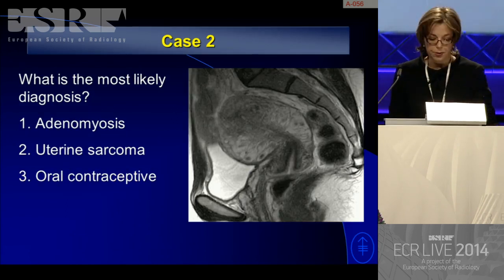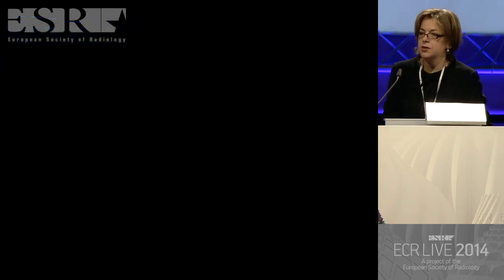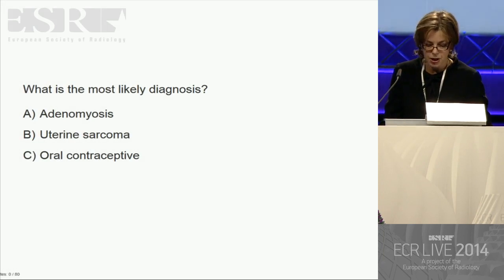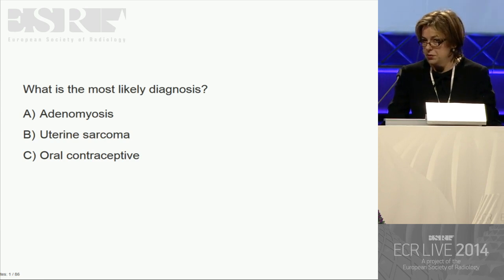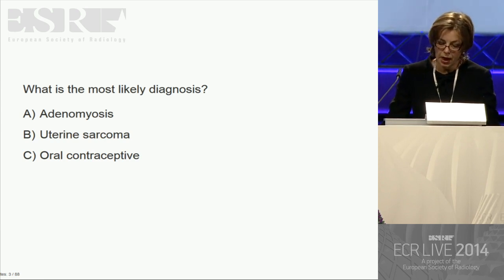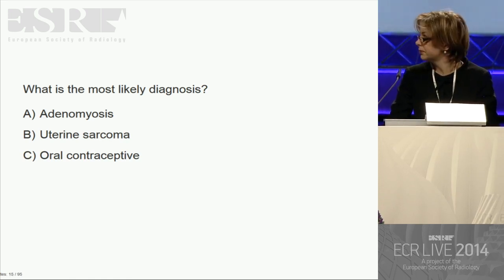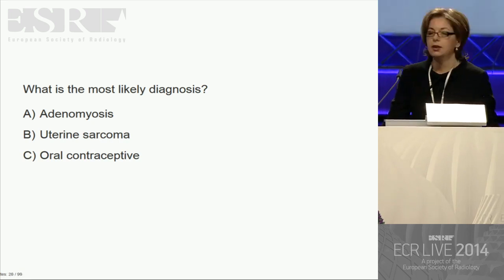Case number two. This patient's MRI was done for lumbar spine pain — no pelvic symptoms. The finding is incidental. The question is: adenomyosis, uterine sarcoma, or a patient on oral contraceptive use?